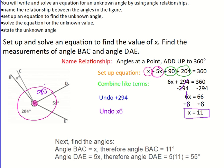If you wanted to go back and do a check, you would take 11 plus 55 plus 90 and 204 and make sure they add up to 360 degrees. Because these were angles at a point.